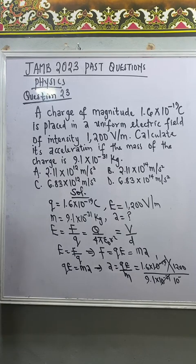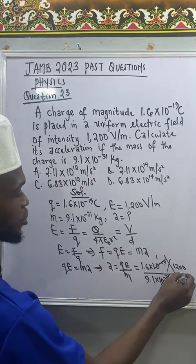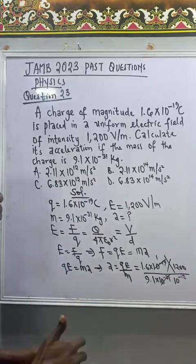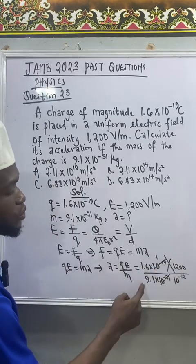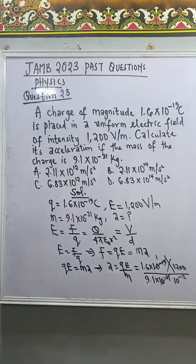Now from here I can multiply 1.6 and 1200 and divide it by 9.1, so we have 1.6 times 1200 divided by 9.1. So this gives me 210.989.